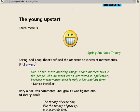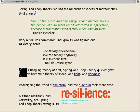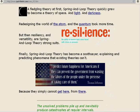A fledgling theory at first, spring and loop theory quickly grew to become a theory of space, and light, and darkness. Redesigning the world of the atom and the quantum took more time. But then, resiliency and versatility are spring and loop theory's strong suits. Resilience. The ability to bounce back when faced with stress or pressure.